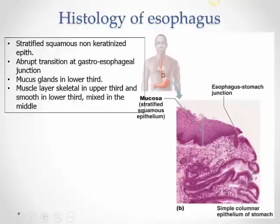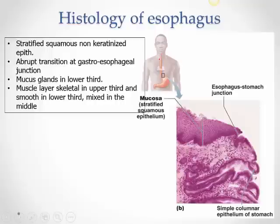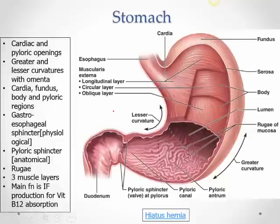The lower third of the esophagus has mucous glands as a protective mechanism to neutralize any acid that passes through. The muscularis externa of the esophagus transitions in thirds: the upper third is skeletal muscle, the middle third is mixed with increasing smooth muscle, and the lower third is entirely smooth muscle.